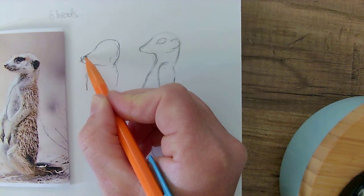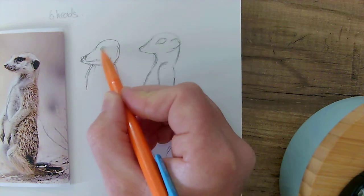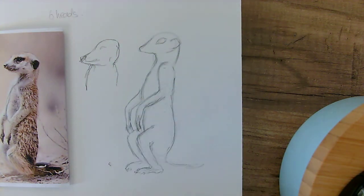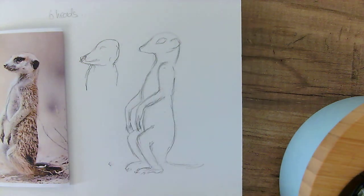For me, it's a lot easier and more effective—this technique of simplifying the shapes first, building up the scale and the proportion of the animal or object that you're drawing from, before you actually start to add any sort of detail regarding texture or any sort of shading.